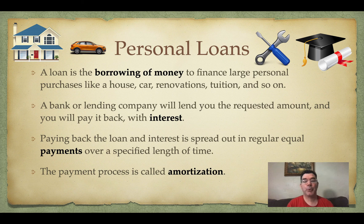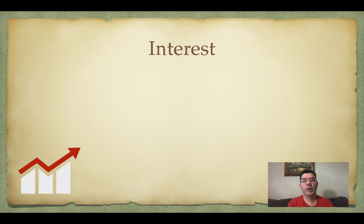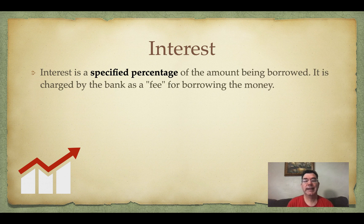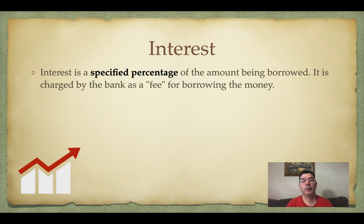The process of paying back that loan and interest is spread out over regular payment intervals for however long you agree to borrow that money, and that process is called amortization. Interest is just a specified percentage that you agree to when borrowing the money — you pay back the original amount plus an additional percentage as a fee for borrowing.